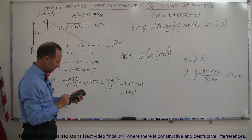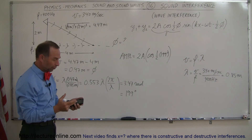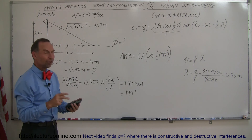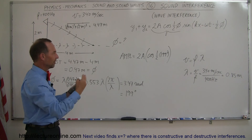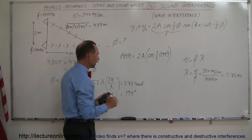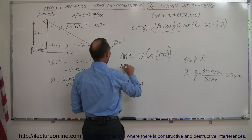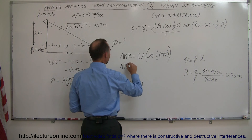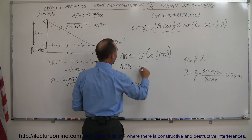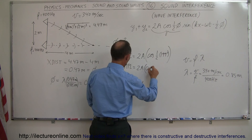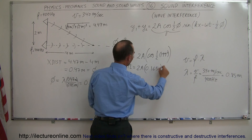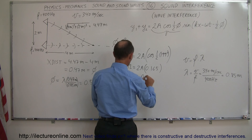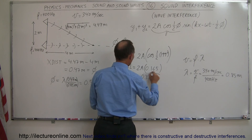We need the cosine of 99.5 degrees. Taking the cosine gives us minus 0.165 — the sign doesn't matter; we just want the magnitude, 0.165. So the amplitude when the two waves meet is 2 times the original amplitude times 0.165, which gives us 0.331 of the original amplitude.